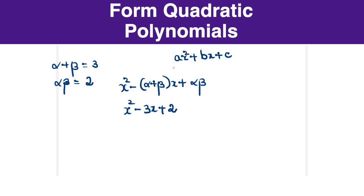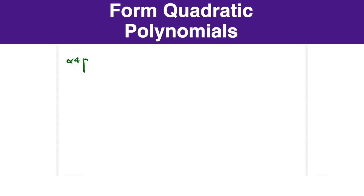Let us take another example to solve and understand. The values are alpha plus beta equals 1/4 and alpha beta equals 3.